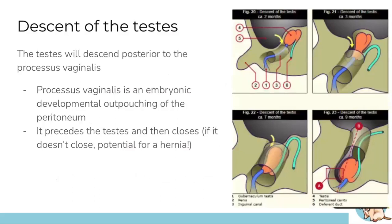Looking at the diagram on the right, we can identify a couple of things. The cylinder shown is the inguinal canal. You can also see a blue chord-like structure — that's the gubernaculum — and you can see it getting shorter and shorter over time. As it shortens, it pulls the testes all the way from where they started into the scrotum. The pink structure represents the testes.